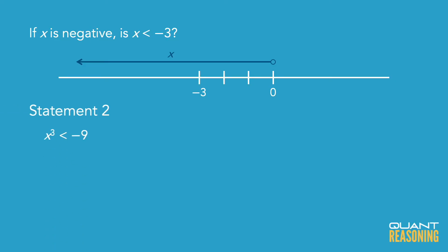In this case, we're told that x cubed is to the left of negative 9, which does imply that x itself is to the left of 0, but we already knew that. We just wanted to know which side of negative 3 x is on.